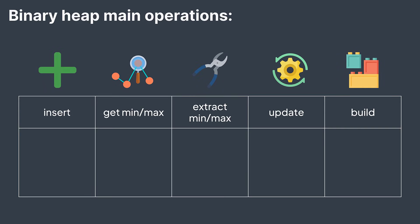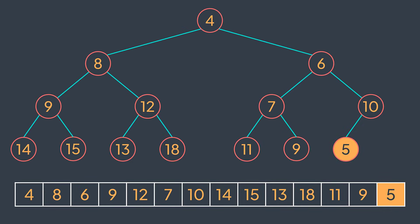We have five main operations that we need in a binary heap: insert an element, get the min or max element, extract the min or max element (which means getting its value but also removing it from the heap), update the value of a node, and build a heap. You need to know that we cannot add, update, or remove a node from a heap randomly — we need to respect the heap property. For example, if we have a min heap and we insert five without doing anything else, we would break the heap property, since 10 would no longer be smaller than or equal to its children.